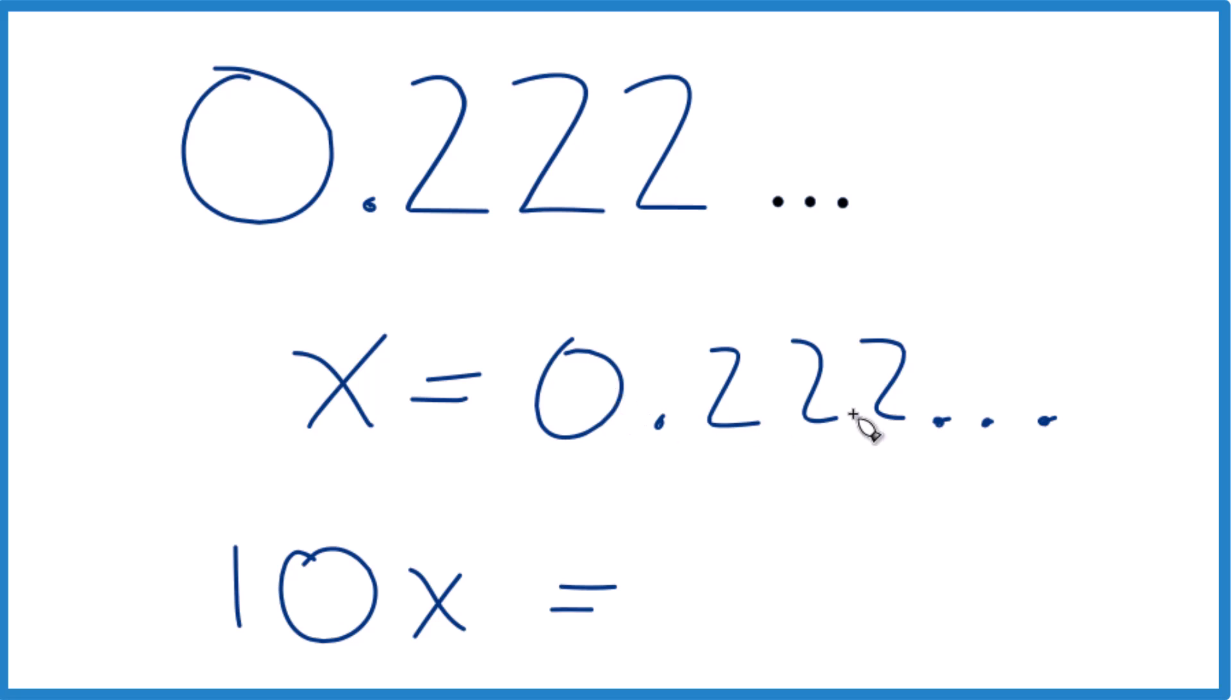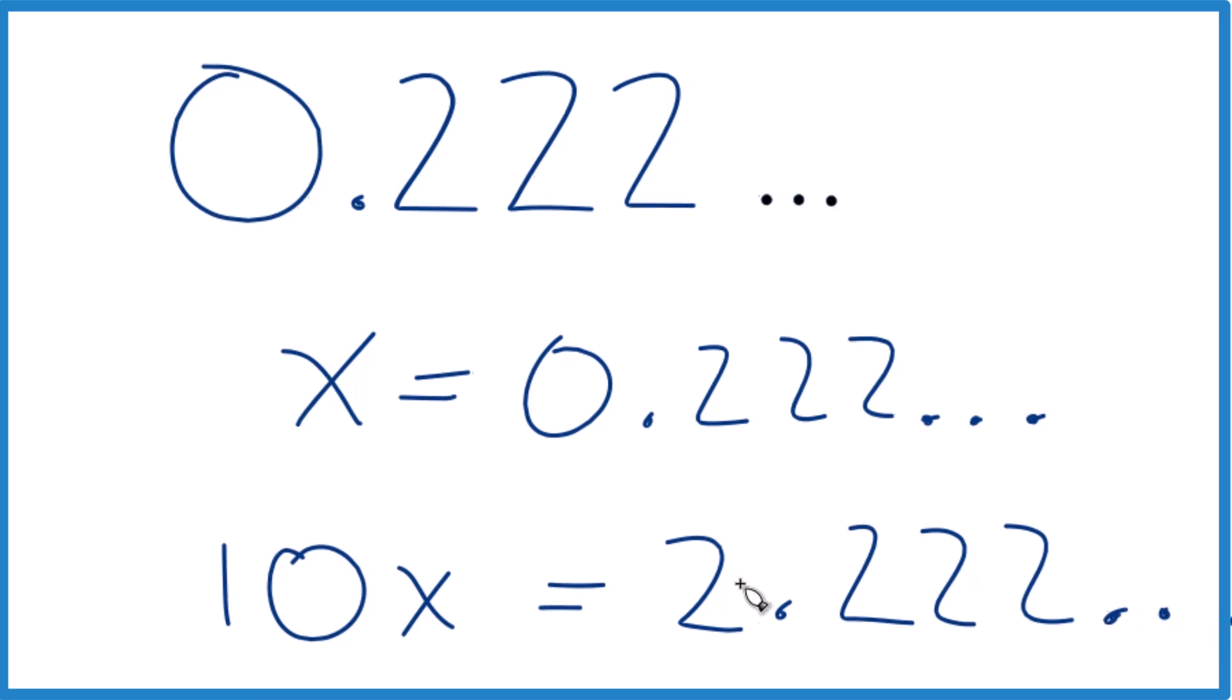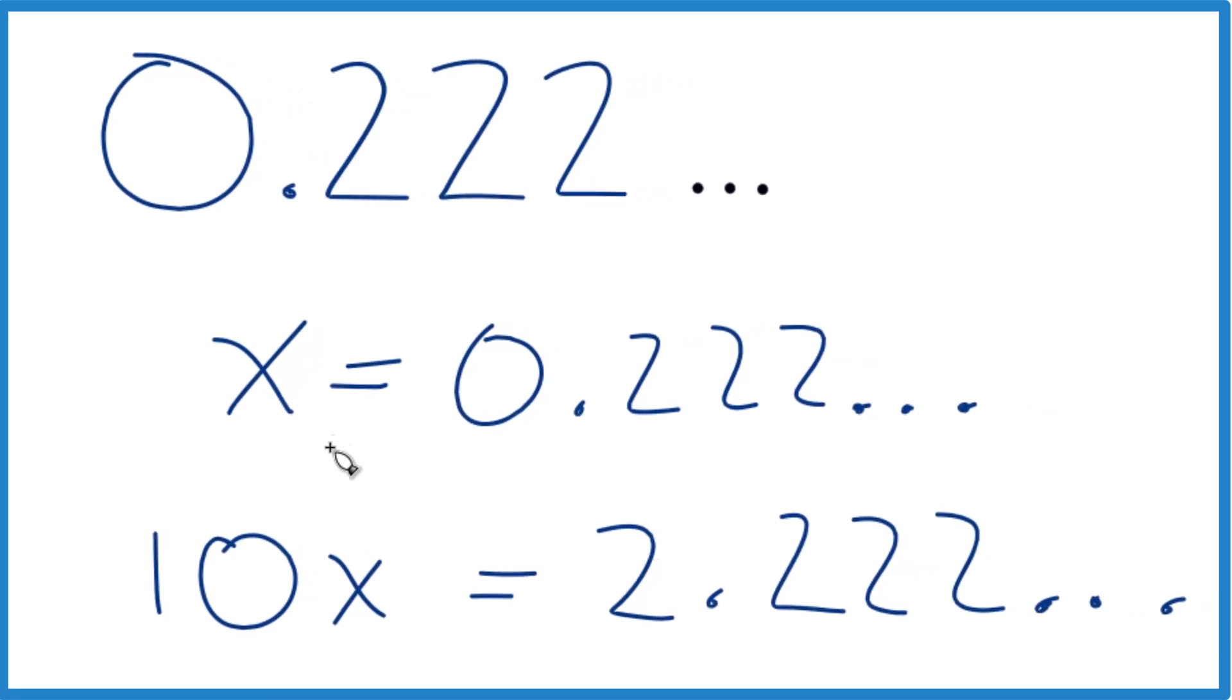And then 10 times 0.222 repeating is 2.222 repeating. So it's looking a little better, we have a whole number here, 10X over here. If we could subtract the end off of this, if we can get rid of that, we'd have a whole number and that would be really helpful.